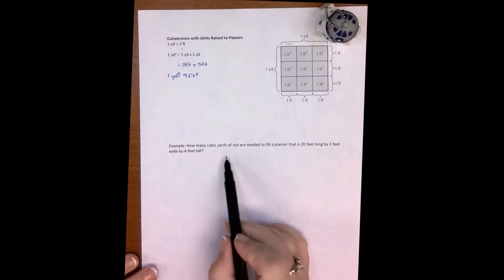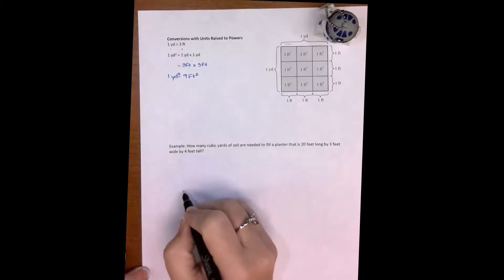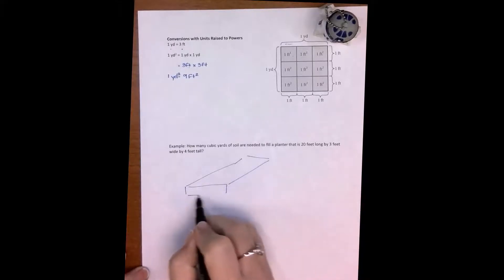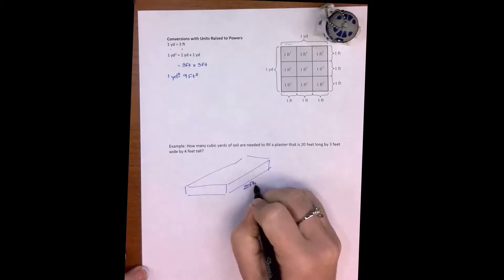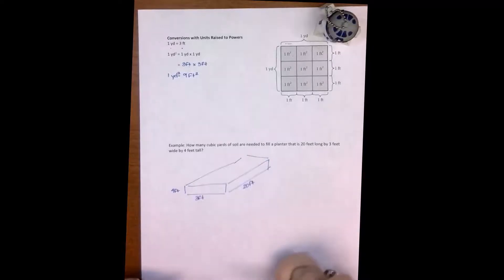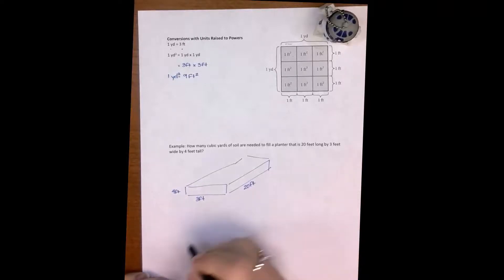We've got how many cubic yards of soil are needed to fill a planter that is 20 feet long by three feet wide by four feet tall. So we have a planter, not necessarily to scale here. And it is 20 feet long and it's three feet wide, and then it's going to be four feet tall. Clearly not to scale. First, let's talk about the volume. So you have a couple of choices at this point. I can work the problem in feet then change to yards, or I can change it to yards now. I think that I would prefer to just go ahead and work it out and then change it to yards.